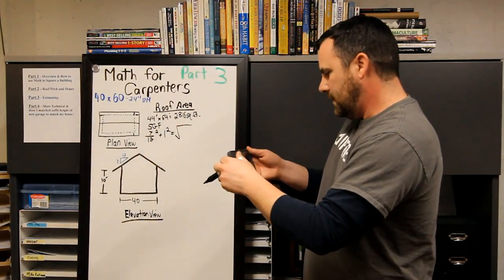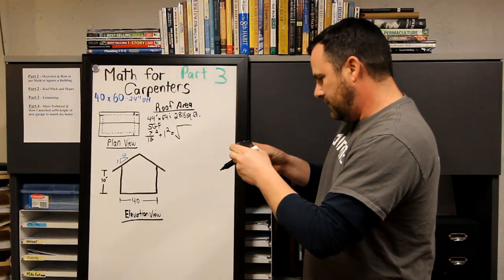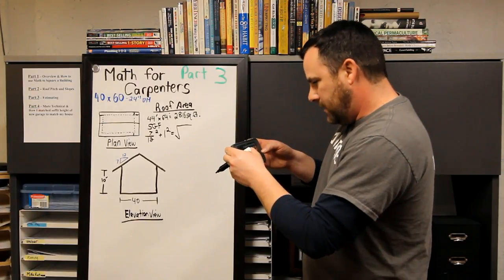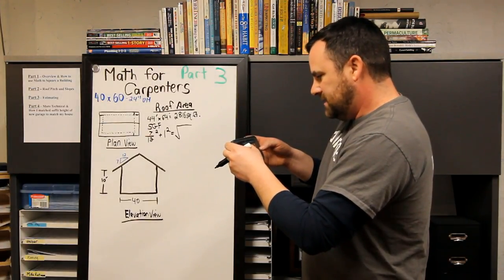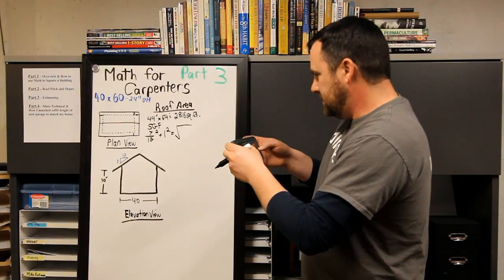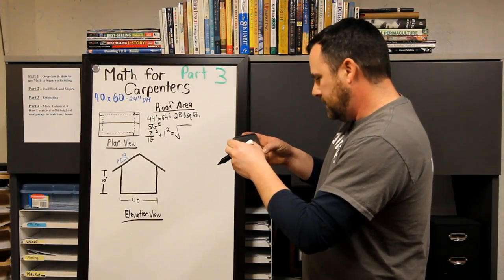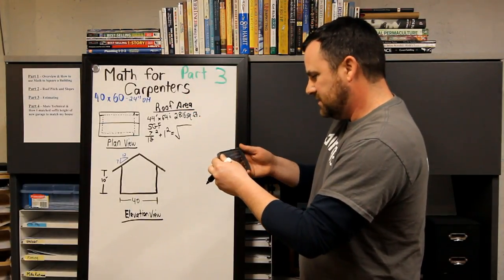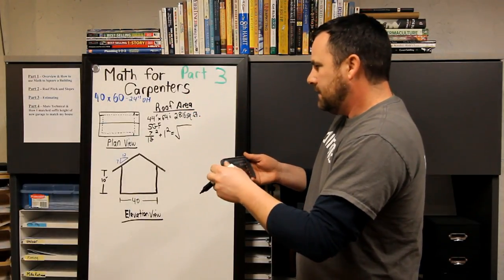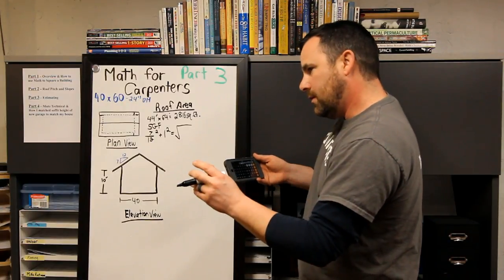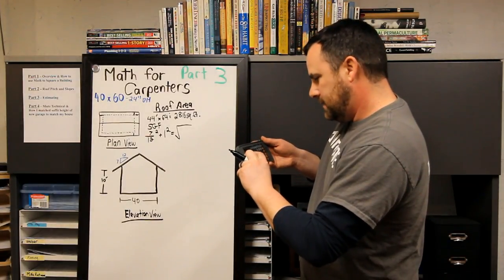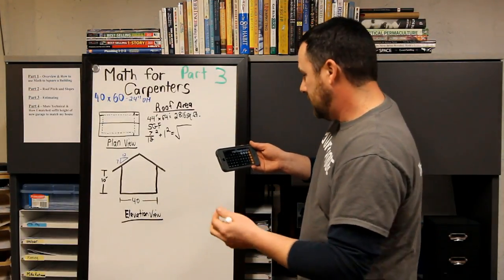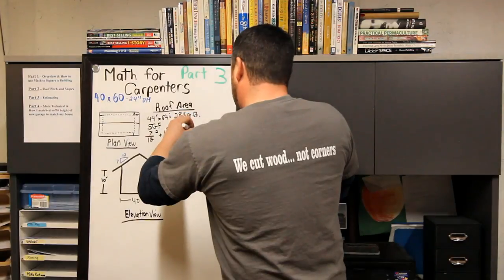So 7 divided by 12 equals 0.5833 squared is 0.340277 plus 1 equals—because 1 squared is still 1, so you just keep it as 1—so it's 1.3402. Now I'm still in the square mode, so I have to square root it to get it back to real life. And I'm not a math teacher, so I don't know the proper terms, but who cares.